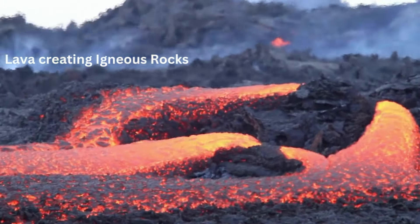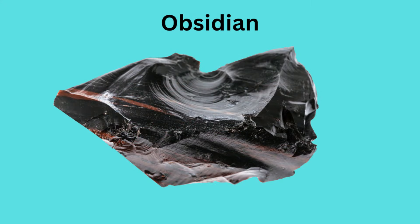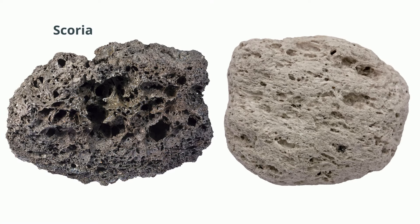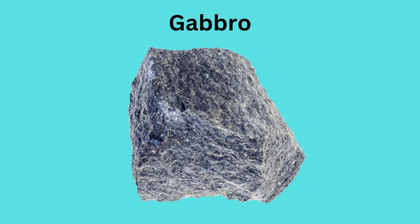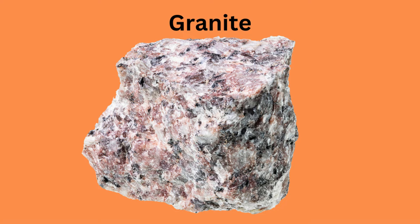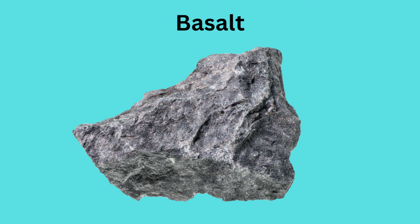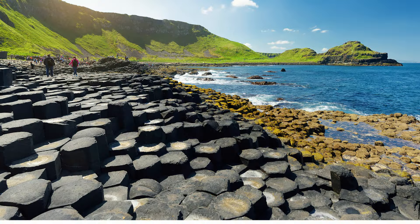Examples of extrusive igneous rocks include obsidian, scoria, and pumice. Molten rock that stays inside the earth is called magma and creates intrusive igneous rocks. Examples include gabbro, granite, and basalt. The Giant's Causeway is a result of molten basalt reaching the surface and creating these geometric rocks.